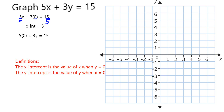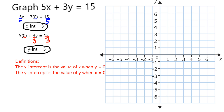To find the y-intercept, I'm going to put 0 in for x, and that leaves me with 3y equals 15. I can simply divide both sides by 3, and that gives me y equals 15 divided by 3, which is 5. Now I have my two intercepts.